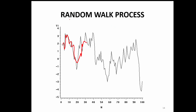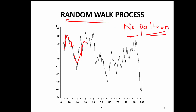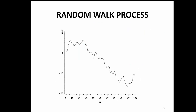Basically, what random walk means is that there is no pattern in the data — just pure random — and there is nothing in the data that you can use for forecasting the future. This is also a typical random walk process.